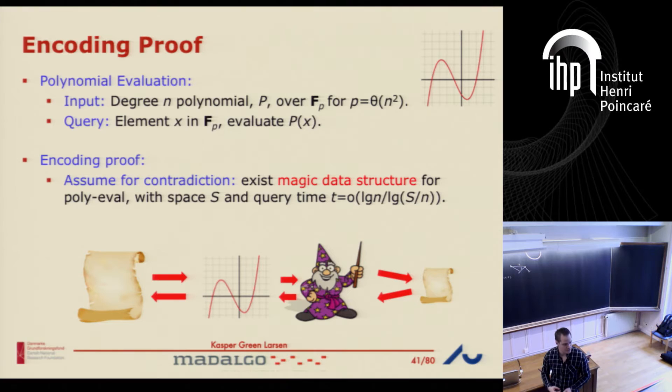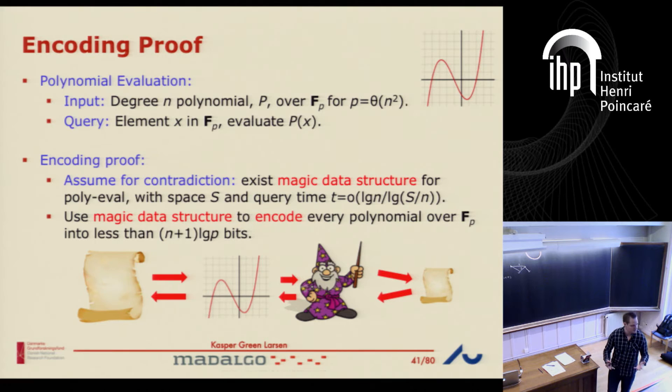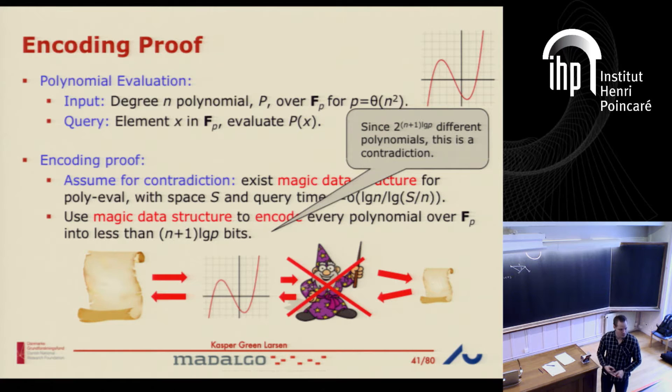Notice, if you remember from the previous technique by Patrascu and Thorup, there was a t sitting in there. So for linear space, this becomes log n — these two cancel out, so we get slightly higher bounds in the linear space case. We want to take every single polynomial we could get as input and represent it in less than (n+1) log p bits. This is a contradiction because there are essentially p^(n+1) or 2^((n+1) log p) different polynomials — they cannot all be represented by a string of length less than (n+1) log p bits.